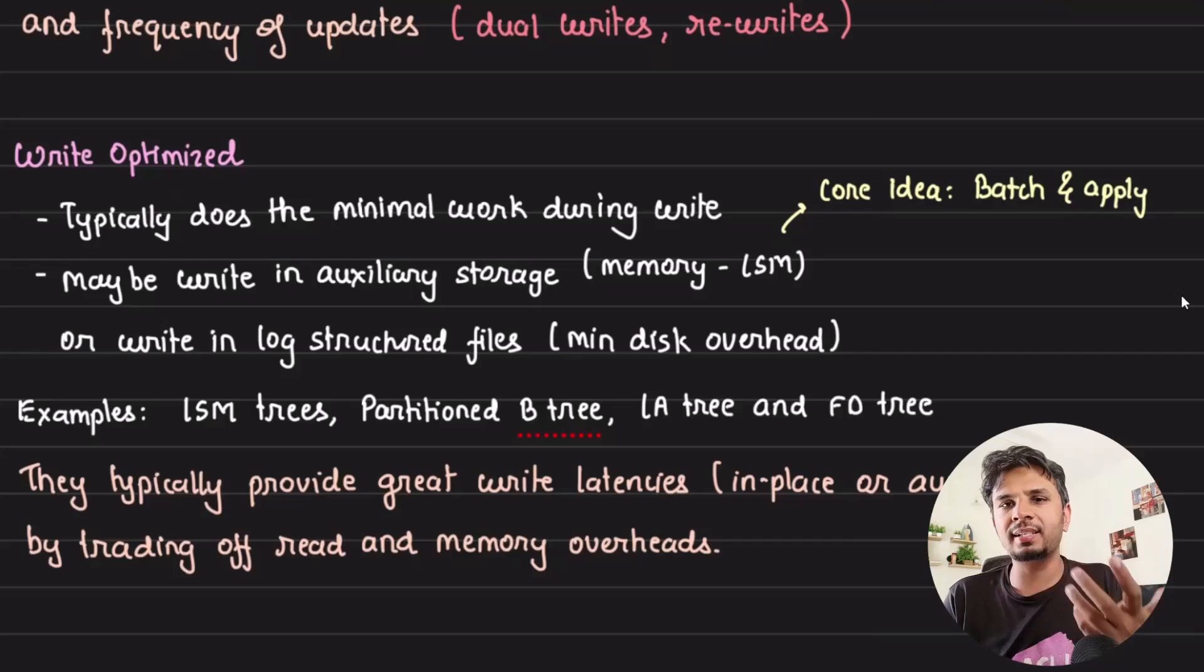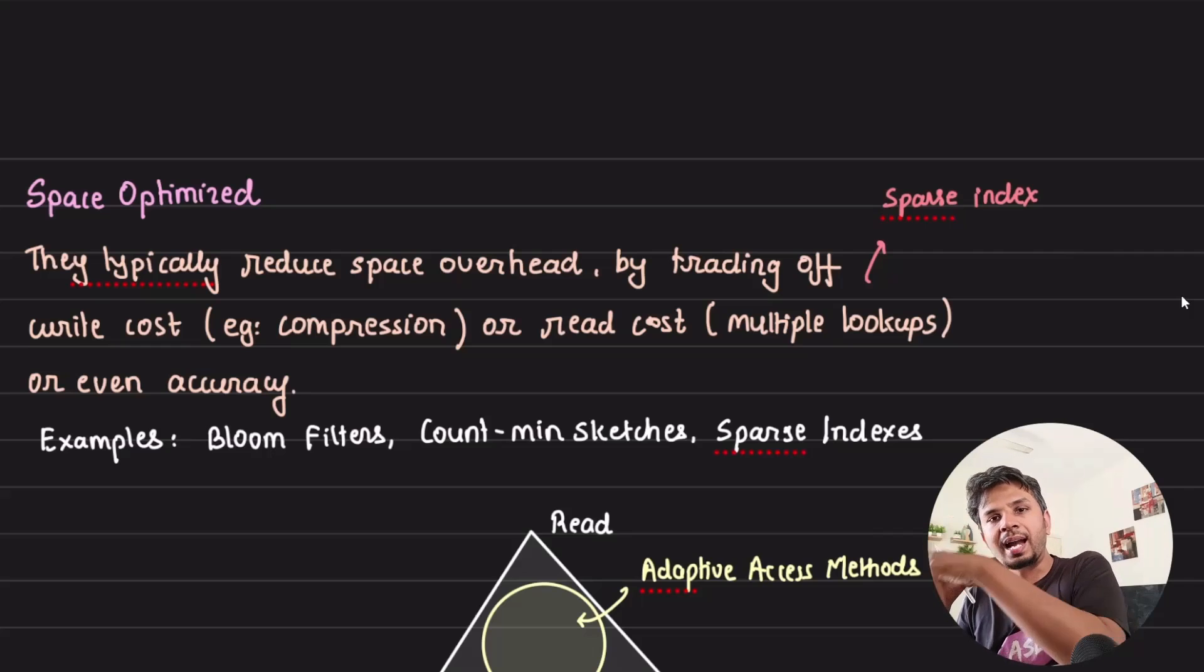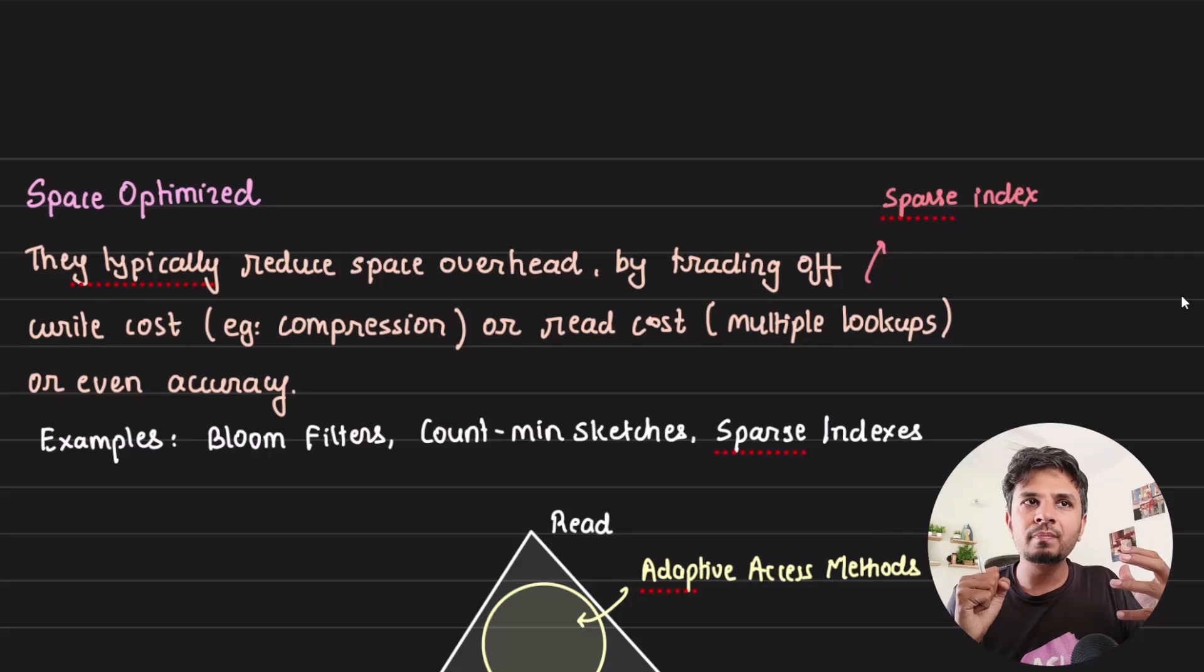The third is space-optimized workloads. We don't want to give up additional space, meaning we want to be highly space-efficient. For example, bloom filters. But in case of bloom filters, we're giving up on accuracy. It's not part of read or update, but something has to take a hit, so accuracy takes a hit because false positives are possible.